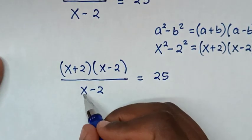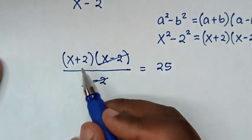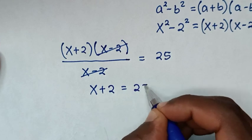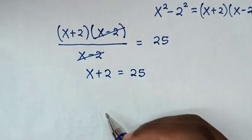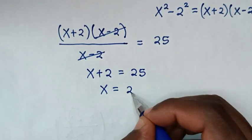Then this x minus 2 will cancel this x minus 2. So it will be x plus 2 is equal to 25. Then we take 2 to the right side. So it will be x is equal to 25 minus 2 is 23.